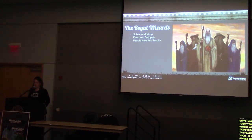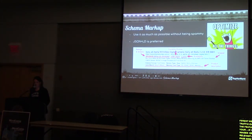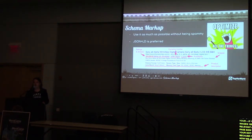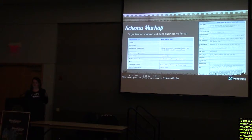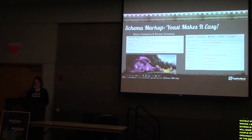Now we're moving into the royal wizards — the fun magical stuff. Schema markup is awesome; use it as much as possible without being spammy. If you do too much or mark things up incorrectly, you'll likely get a notification in Google Search Console. JSON-LD is the preferred method over HTML implementation — it's easier for Google to digest and indexes more quickly. The most common schema types are organization, local business, and person. Be as specific as possible; if there's a subcategory that fits you, use it.